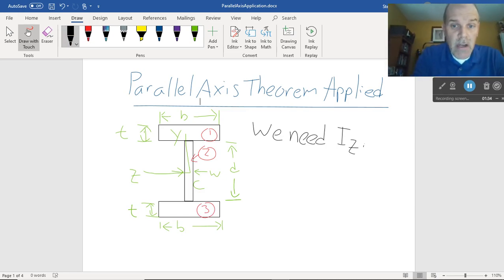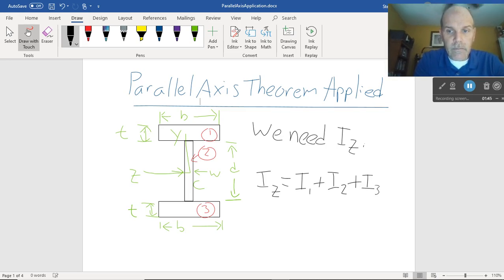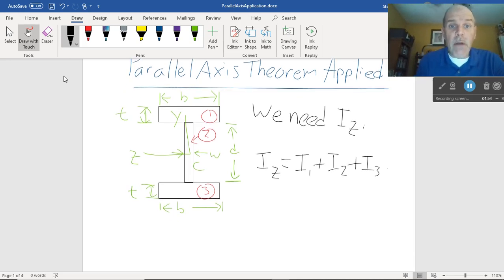And most people are pretty good at saying my total Iz should be equal to I1 plus I2 plus I3. All good, no problems. This is all great stuff so far.